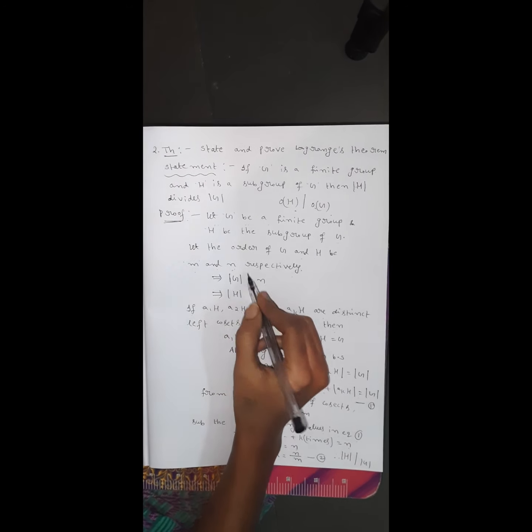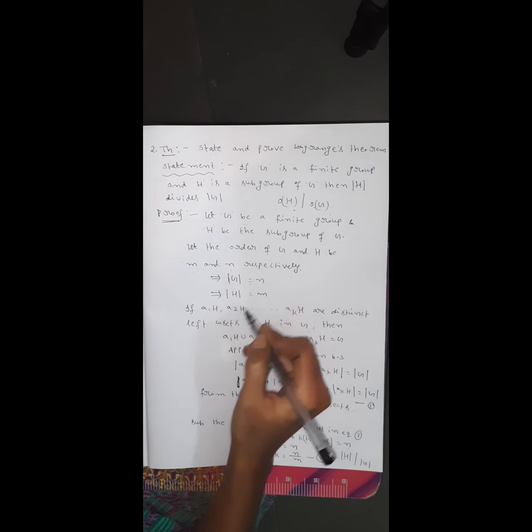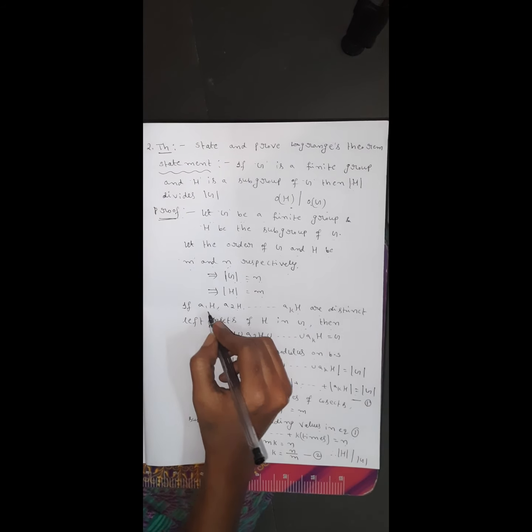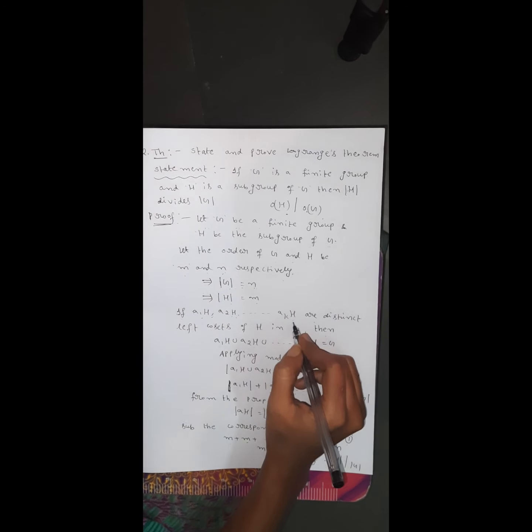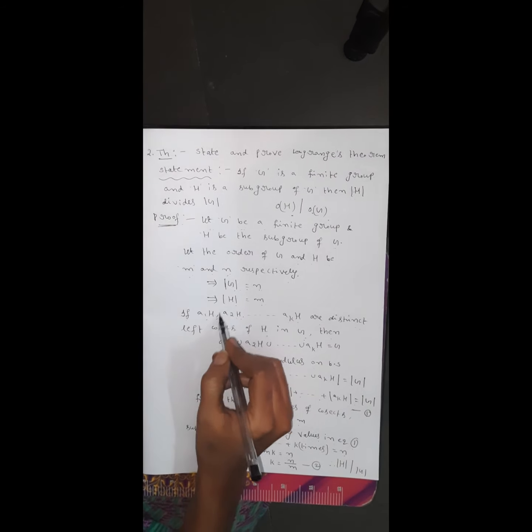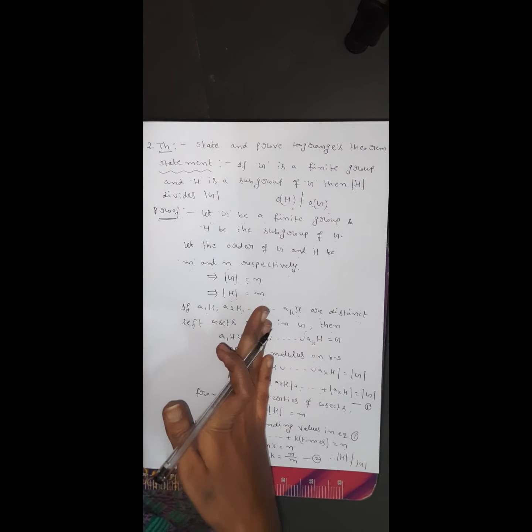So order of G equals N and order of H equals M. Let A₁H, A₂H, and so on, A_KH be the distinct left cosets of H in G.